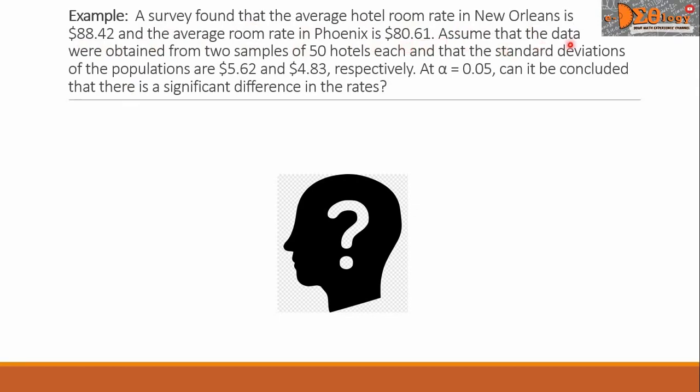Assume that the data were obtained from two samples of 50 hotels each, and that the standard deviations of the populations are $5.62 and $4.83 respectively. At alpha equals 0.05, can it be concluded that there is a significant difference in the rates?